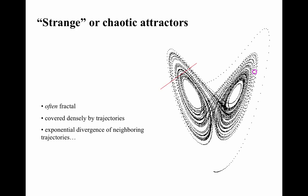Chaotic attractors may have several important features. Exponential divergence of neighboring trajectories is sensitive dependence on initial conditions. There is often fractal structure in these attractors — in this particular one, if you were to slice it crosswise along that red line, what you would get is a Cantor set. A third important feature is that they are densely covered by trajectories in their basins. That is, if I stand on a point on a chaotic attractor and draw a ball around my feet of radius epsilon, denseness tells me that the trajectory will eventually enter that ball — I may have to wait a while, but it will eventually get there.